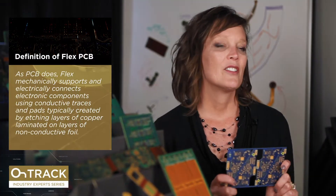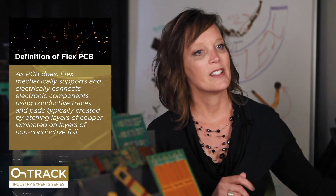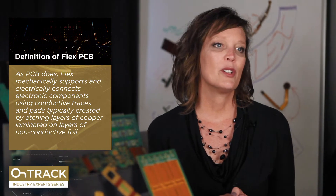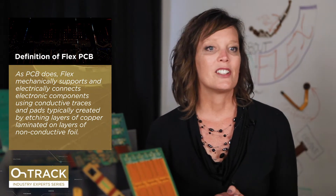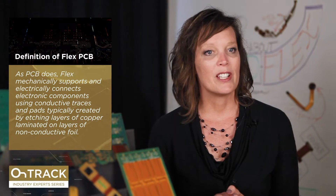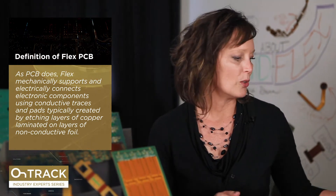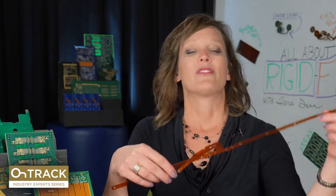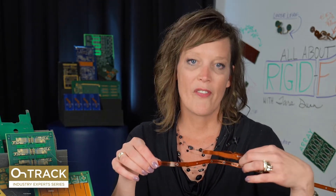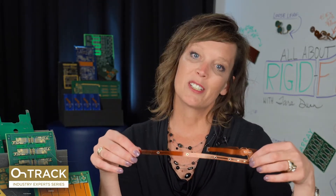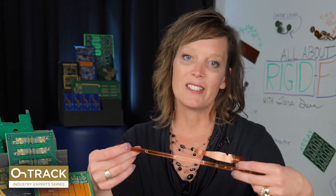Just to get things started with the definition: as a rigid PCB does, a flex is going to mechanically support and electrically connect the electronic components using conductive traces and pads, and it's typically done by etching layers of copper laminate on layers of non-conductive foil. A flexible circuit is going to be done on flexible materials. There are many different types of flexible materials — we're going to look at polyimide today, which is probably the most common material.